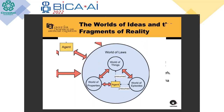Finally, there is the world of laws, or the world of categories. A category is represented by a law that includes or excludes something from the category. Again, I can have categories for properties, categories for things, and categories for episodes — the same sub-worlds of fragments of reality appearing in this world of laws.